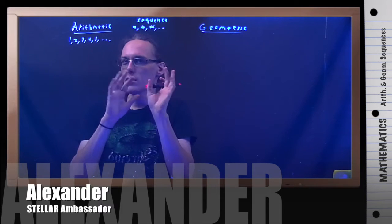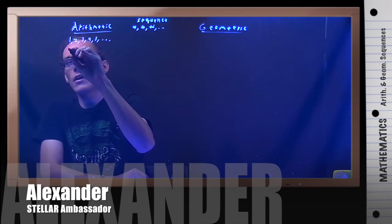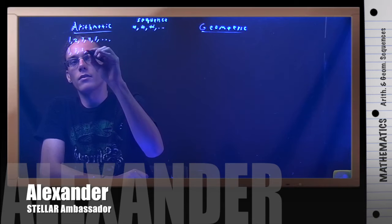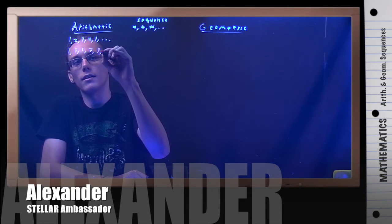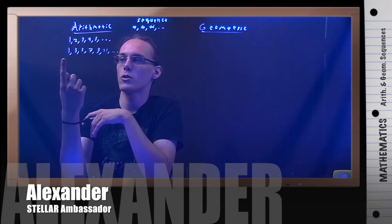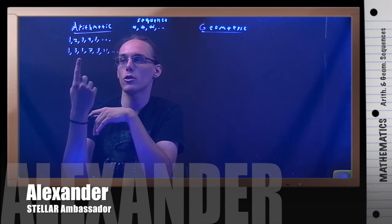Let's look at a slightly more complicated example. Say you had one, three, five, seven, nine, eleven, and so on. Well, here you're starting with one, and what you're doing is you're adding two onto each term.